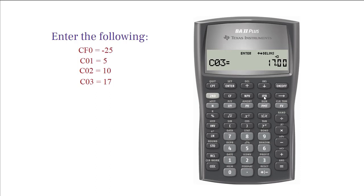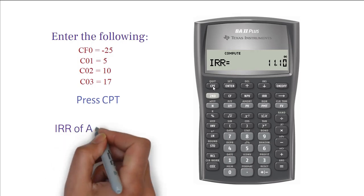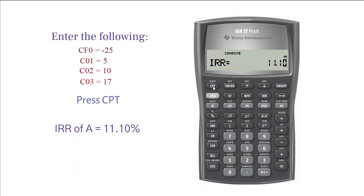When you are done entering all the cash flows, press IRR button. Now, press Compute or CPT. You get IRR for project A equals 11.10%.